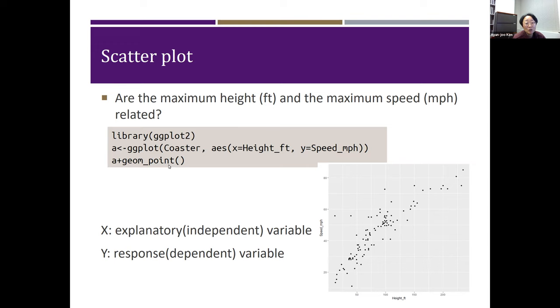If you copy and paste the code in the gray box, these three lines, and paste it in RStudio, RStudio generates the scatter plot on the right bottom corner.